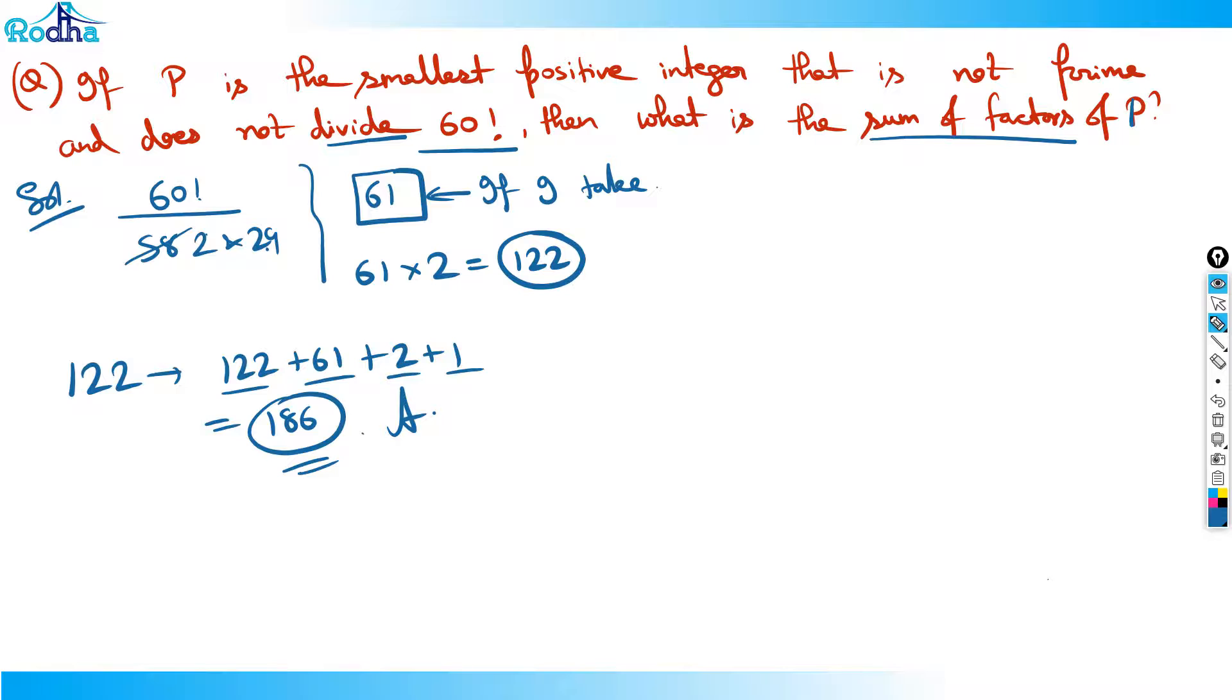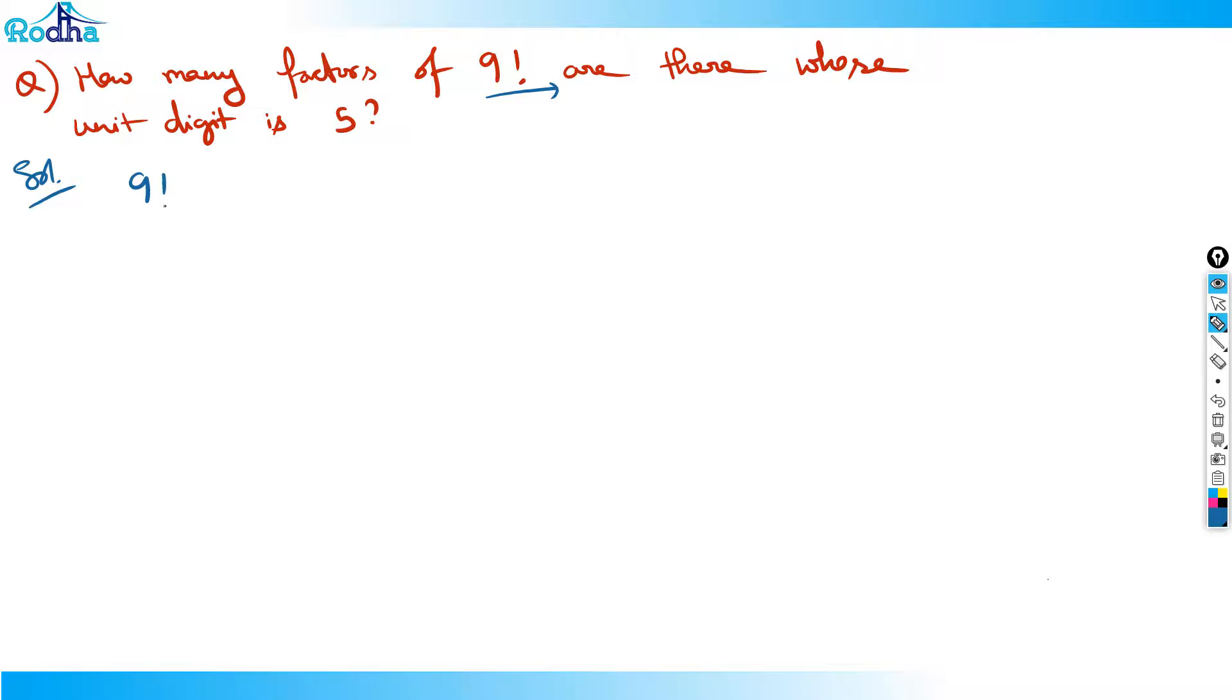Let's move to one more question actually. The next question says that, how many factors of 9 factorial are there whose unit digit is 5? Once you look at this question actually, in this question it basically says that factors of 9 factorial whose unit digit is actually 5. So if we have, now if we factorize this 9 factorial actually.